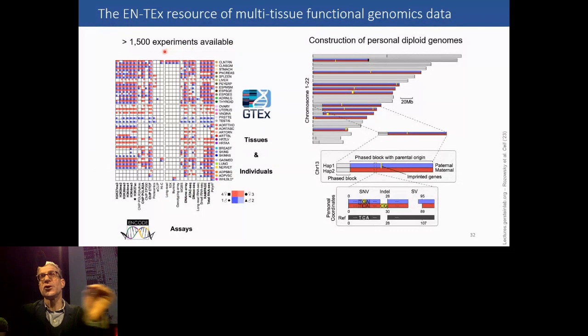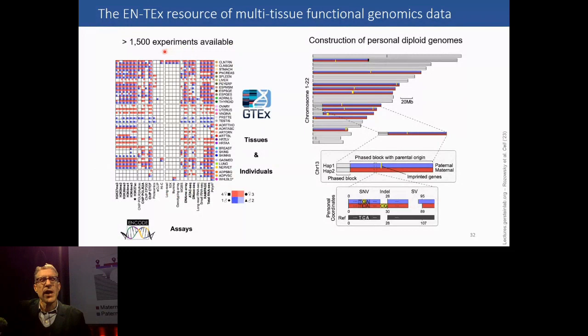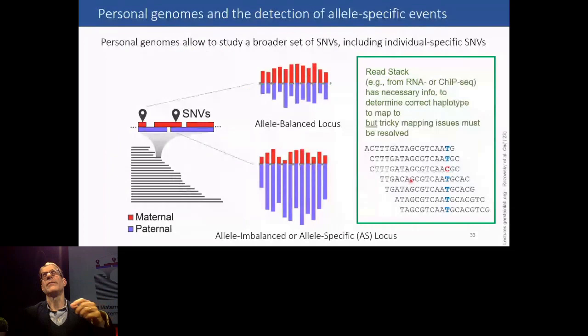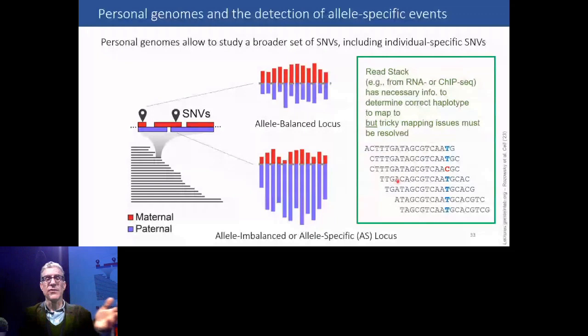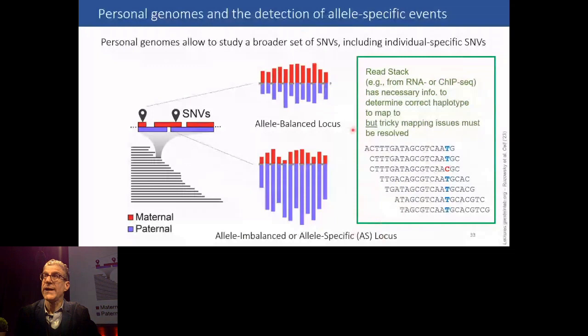We can look at any given functional genomic experiment — say RNA-seq or ChIP-seq — and actually take the reads and map them back uniquely to either the paternal or the maternal copy. Then we can see if there's more coming from the maternal copy than the paternal copy, or if they're equal. If equal, we call it an allele-balanced locus. If unequal, we call it an allele-imbalanced or allele-specific locus.